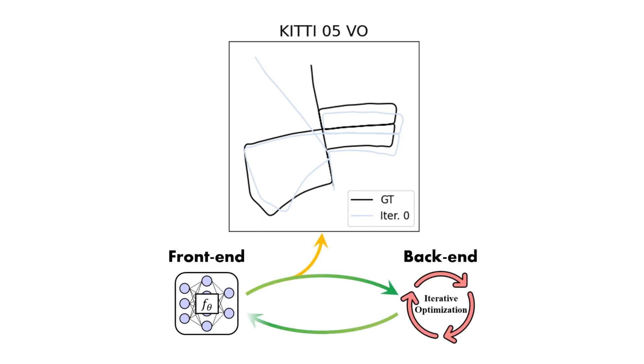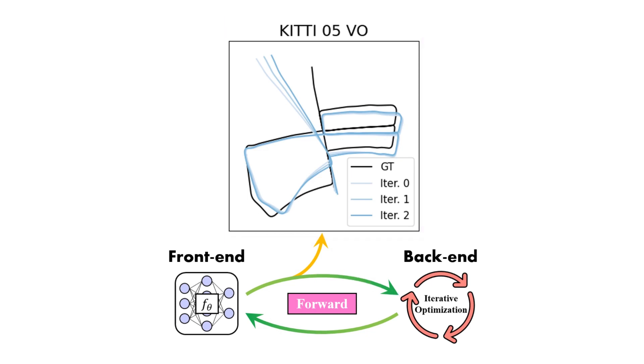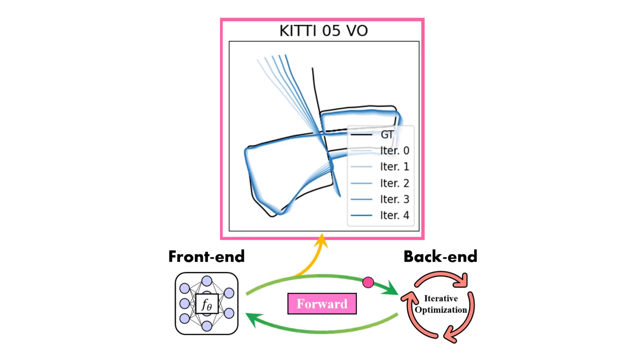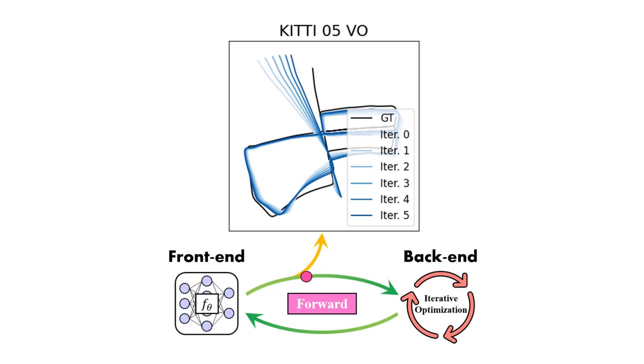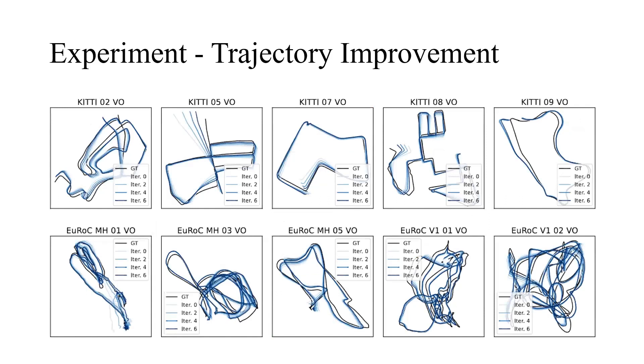We create an animation to show the improvement of VO trajectories during imperative iterations. It is observed that the VO trajectories are adjusted toward ground-truth through self-learning. Note that the ground-truth trajectory is plotted only for reference and is not utilized in the algorithm. Here are more examples on different sequences of KITTI and EuRoC.